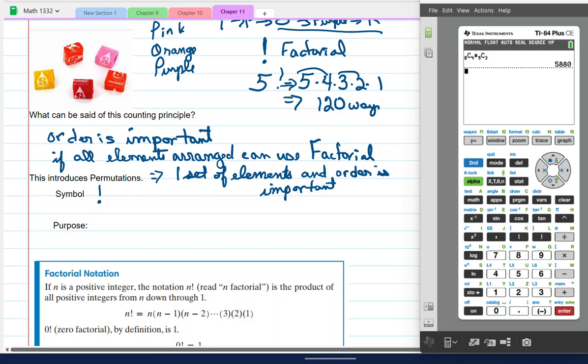So we're introducing permutations. Permutations are one set of elements, countable, specific, unique, and order is important. So we have the symbol factorial if we use all of the elements. And if we don't, if we use a subset, then we have NPR, where N is the total elements in the set and R is the size of the elements to arrange, or I should say quantity. And of course, that's called the permutation counting principle.